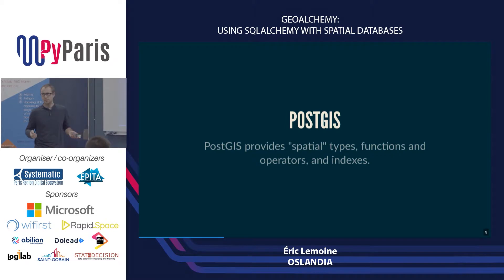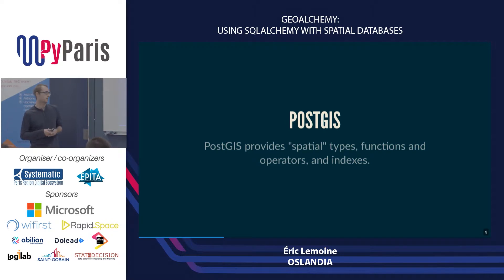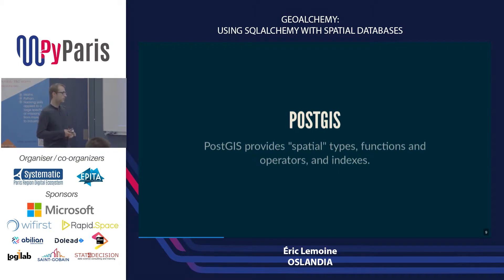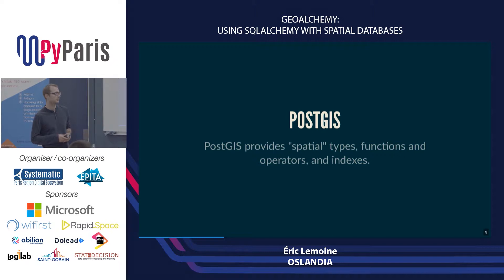What does PostGIS provide? It provides special types like geometry type, geography type, and raster type. It also provides SQL functions that you can use to manipulate your geometric and geographic data. It has operators as well, and also indexes — so geographic data is indexed the same way as other data types to speed up queries.